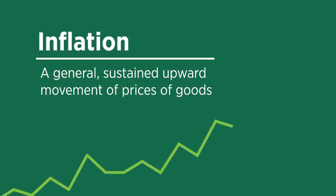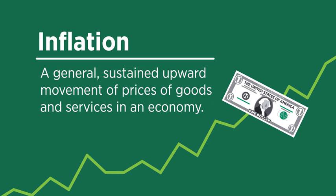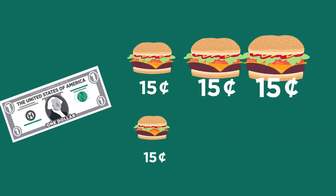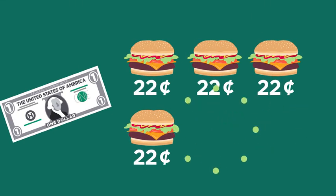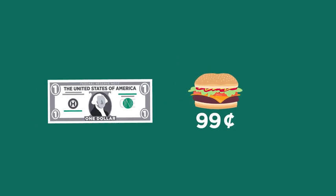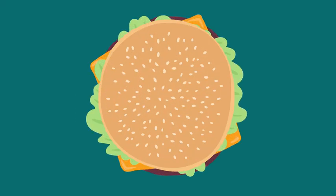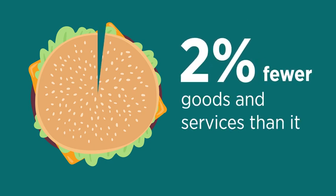Inflation is a general, sustained upward movement of prices of goods and services in an economy. Prices tend to rise over time, and as prices rise, the quantity of goods and services that each dollar can buy diminishes. A 2% annual inflation rate means that, on average, a dollar buys 2% fewer goods and services than it did the year before.